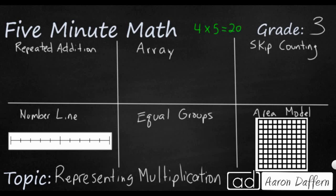But how can we represent that multiple ways? Let's look at all of these different options we see here on the screen. So repeated addition — four times five means I am adding five plus five plus five plus five. This is four groups of adding five.